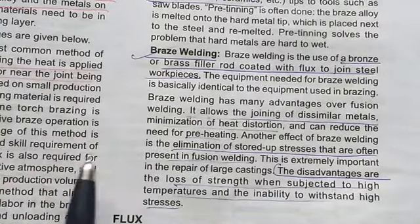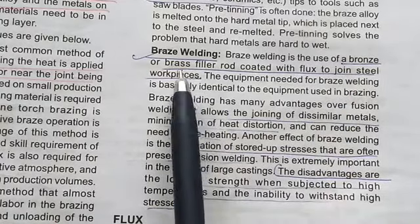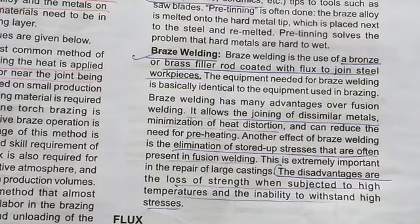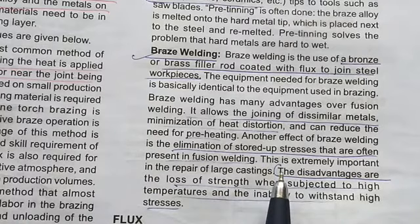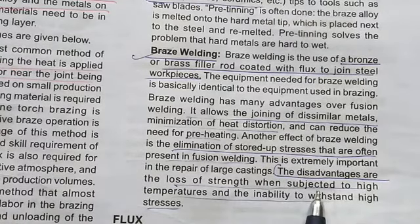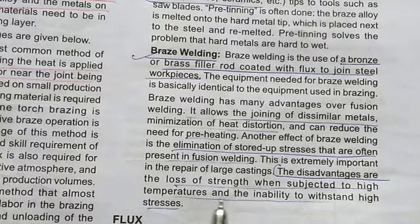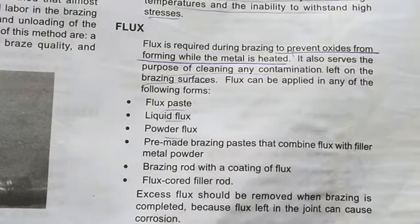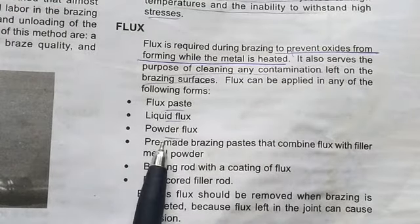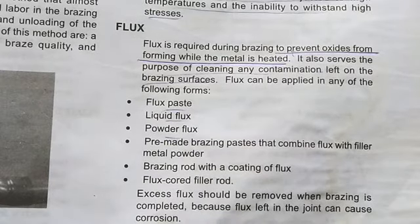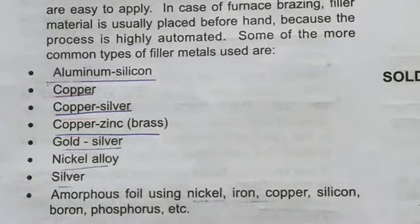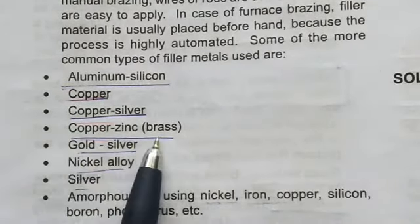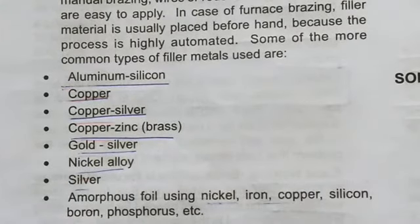Braze welding uses a bronze or brass filler rod coated with flux to join steel workpieces. The disadvantage of this method is low strength and that it is subjected to high temperature. Types of flux include paste, liquid, powder, brazing rod with coating of flux, and flux filler rod. Types of filler material used in brazing are aluminium-silicon, copper-silver, copper-zinc, gold, silver-nickel alloy, and silver amorphous foil.